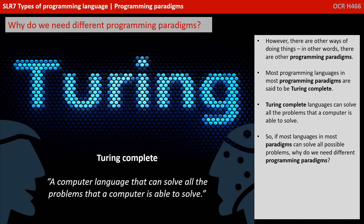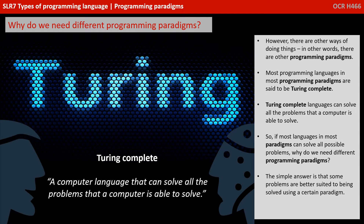Most languages in most programming paradigms are said to be Turing-complete. Turing-complete languages can solve all problems that a computer is able to solve. So you need to ask the question: if most languages in most paradigms can solve all possible problems, then why would we need different programming paradigms at all? Well, the answer is quite simple — some problems are simply better suited to being solved using a certain paradigm than another.